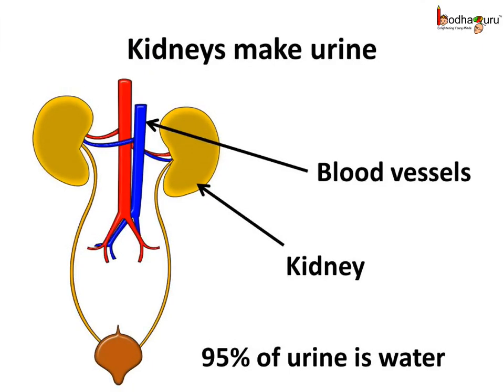How is urine formed? Urine is formed in the kidneys. The kidneys are a pair of reddish, bean-shaped organs. The blood collects waste from all over the body, and when that blood flows through the kidneys, the kidneys collect these wastes from the blood and form urine. You know, 95% of urine is just water. The kidneys are made of small nephrons which filter blood.